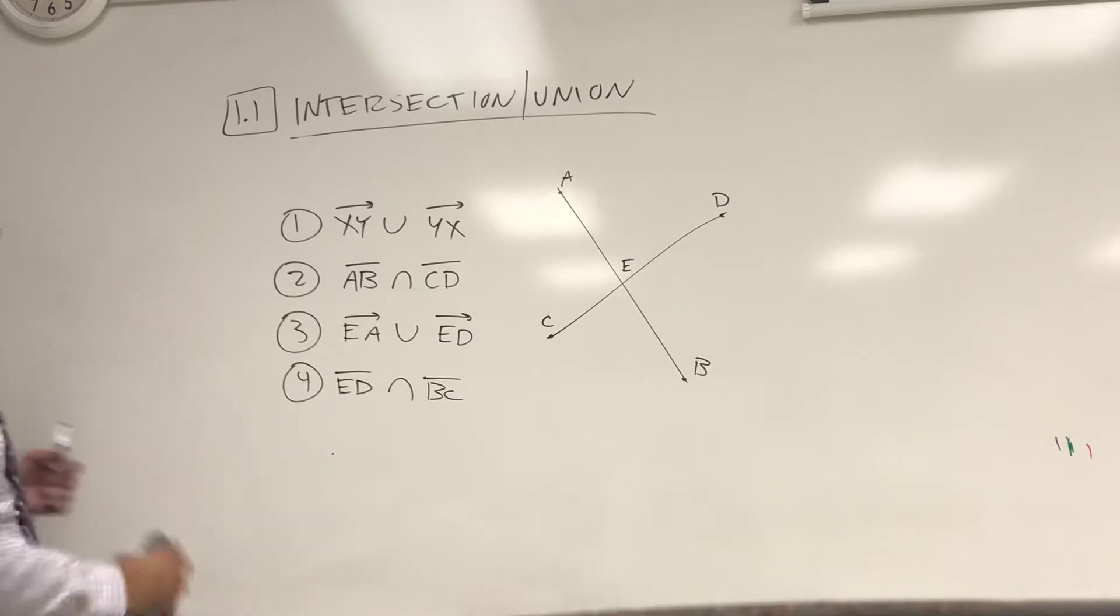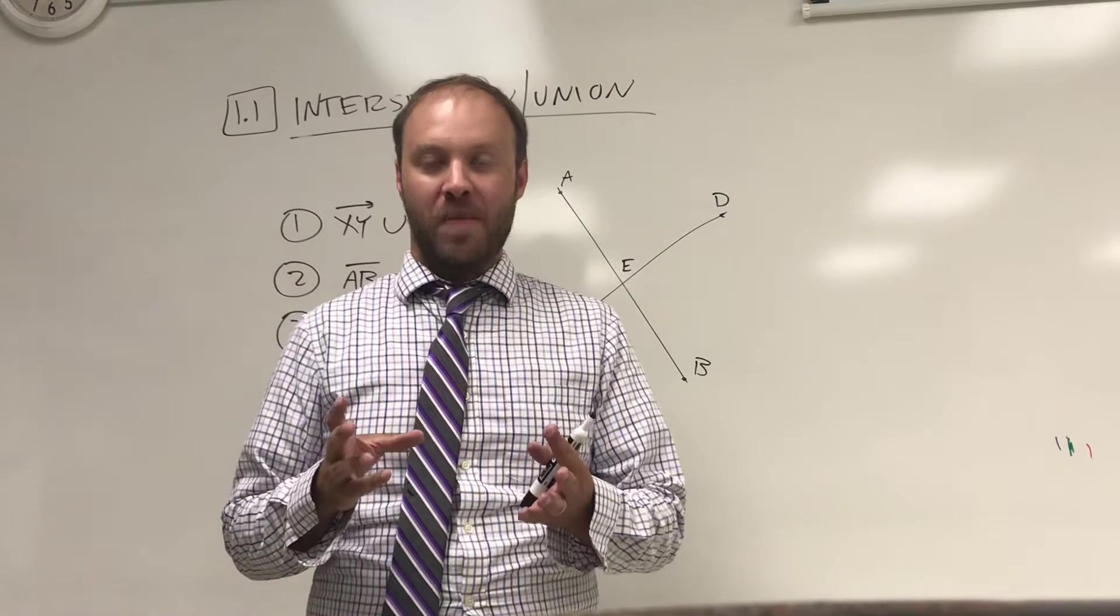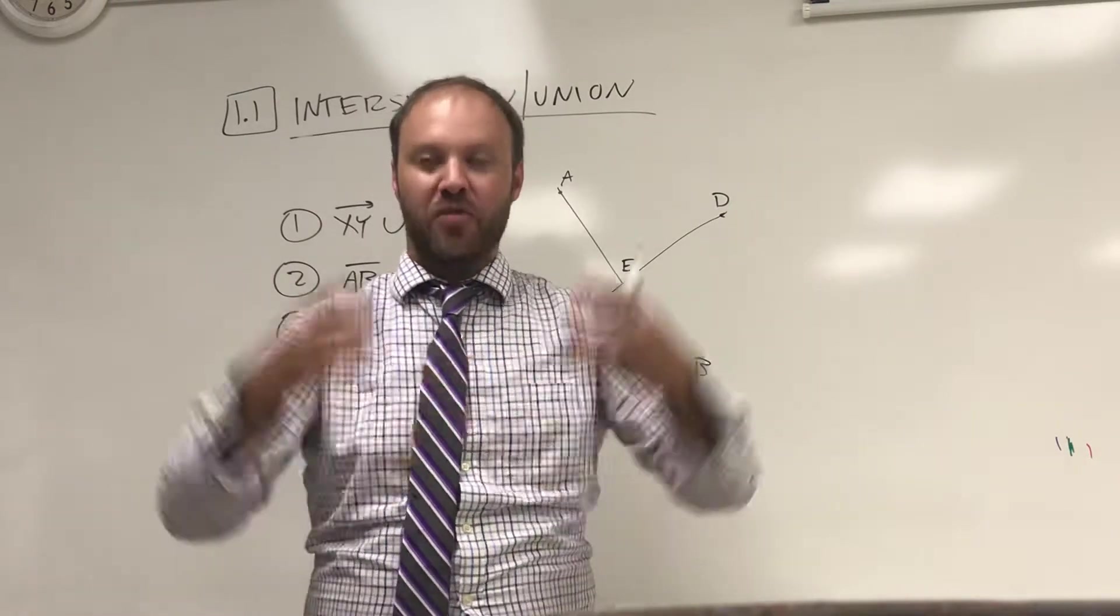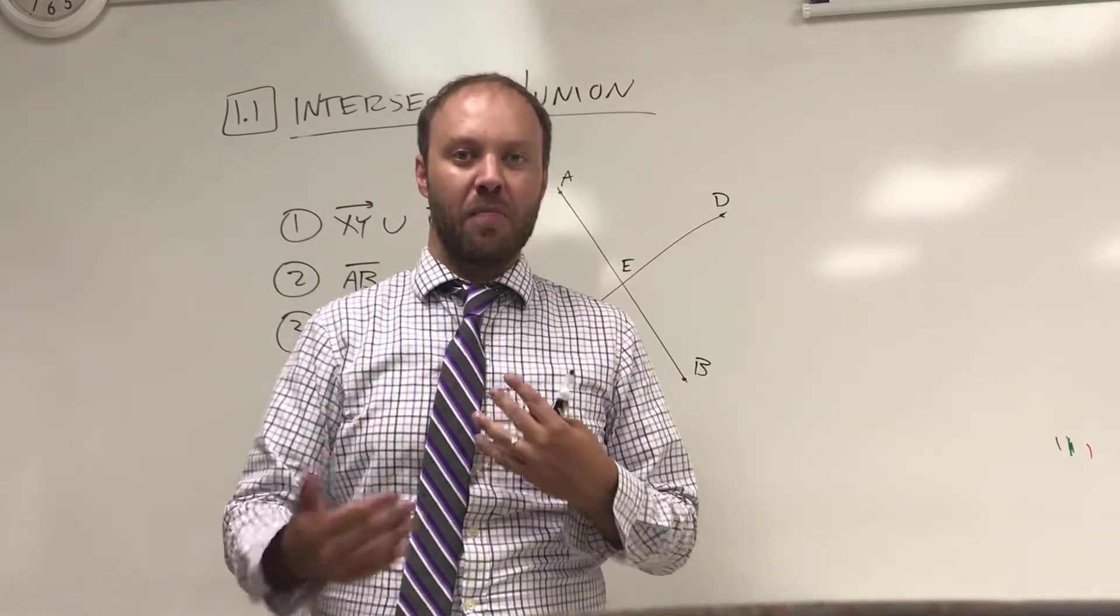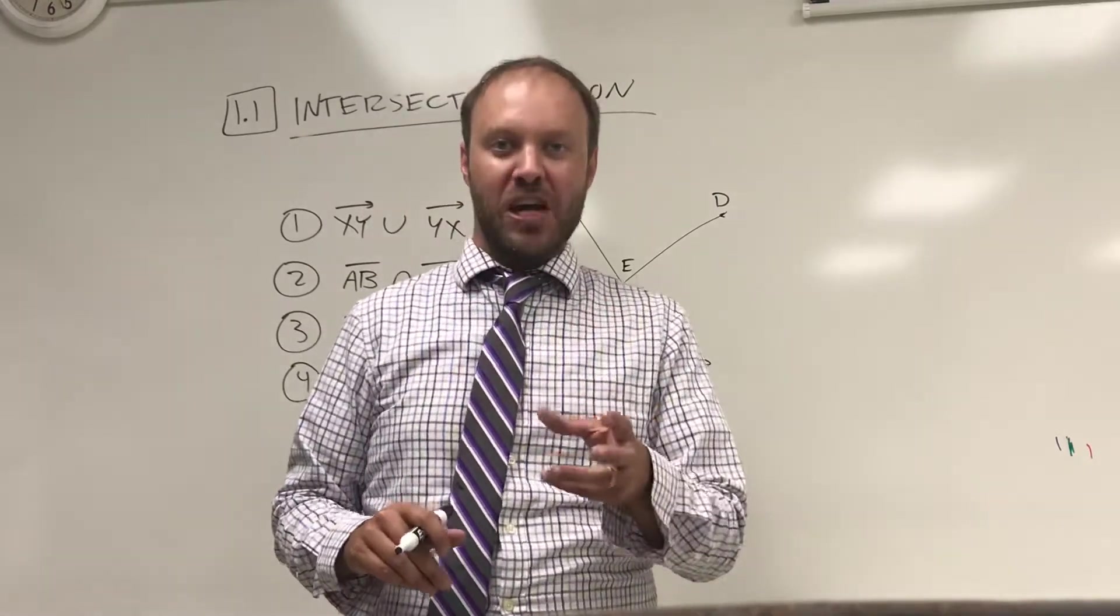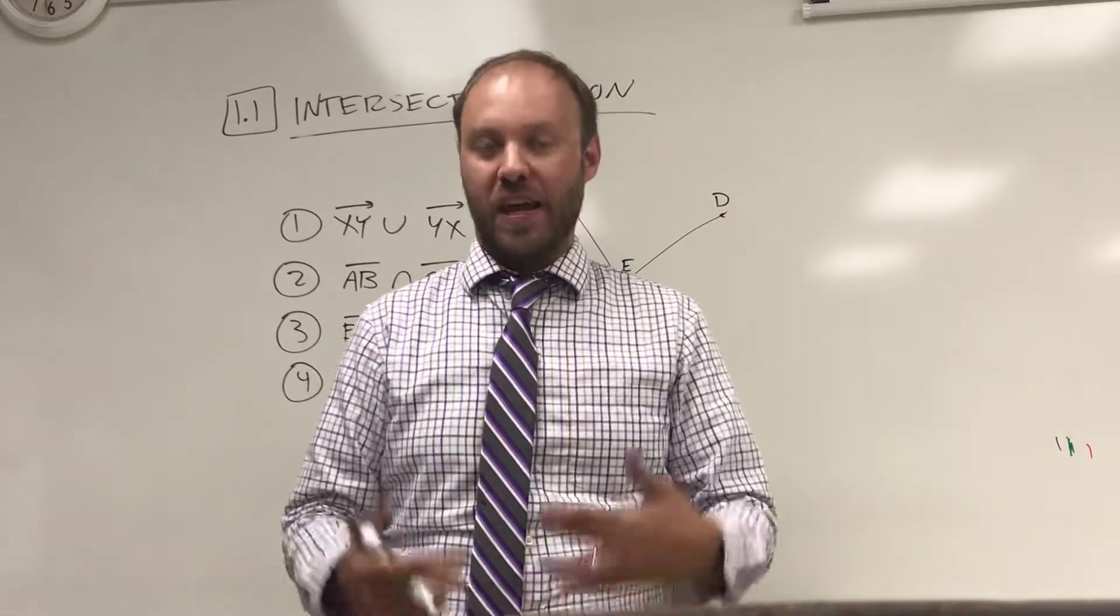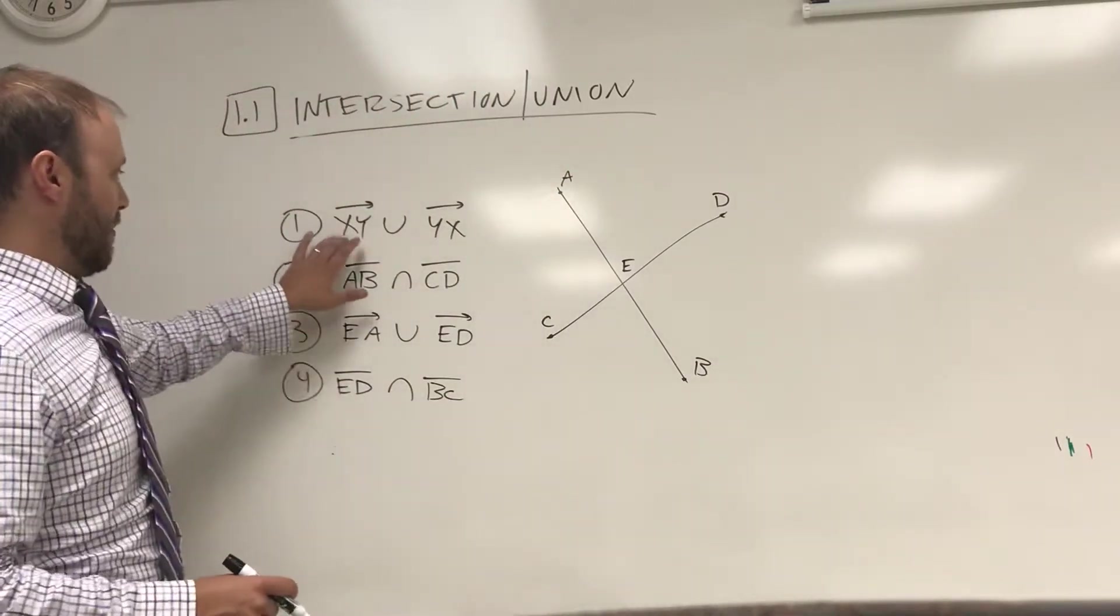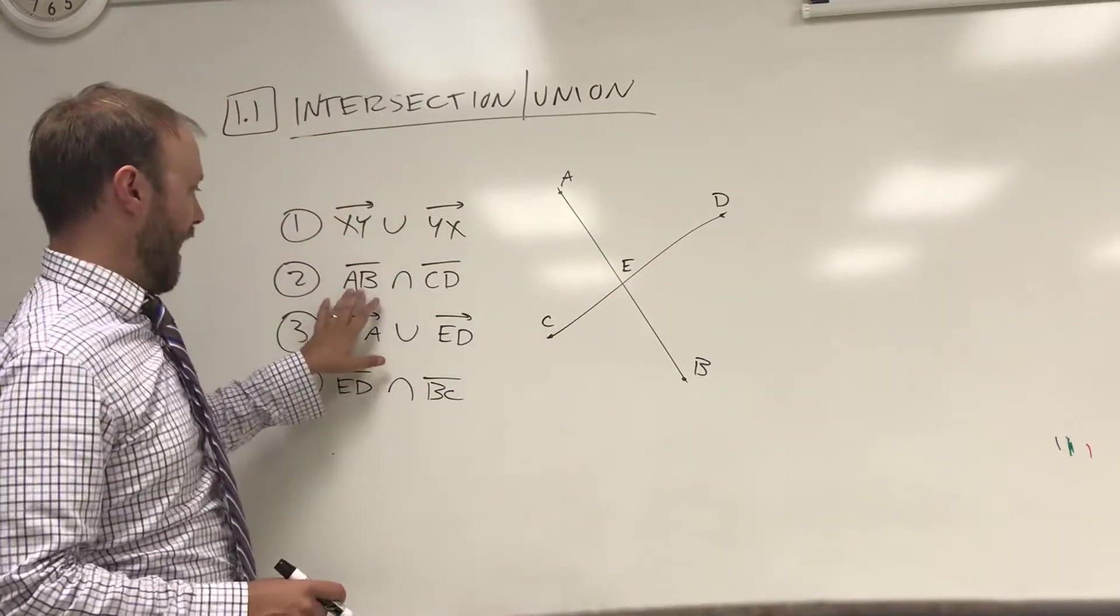We're gonna do the geometric version of this. Same kind of thing - a union would basically involve any points on both figures combined together, unites the two figures together. An intersection would be any points that are on both figures at the same time. And what we're gonna try to do is name the shape that's created when we unite things together or when we look at where things intersect or cross over. So I'm actually gonna skip this when I come back to it because my diagram doesn't have X's and Y's in it. Let's start with this one: AB intersect CD.